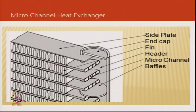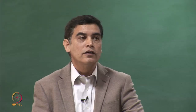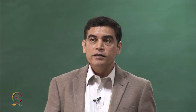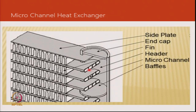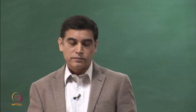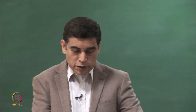Inside a micro-channel heat exchanger, there is a header into which refrigerant enters and is then distributed into different channels. Each strip has micro-channels within it — small openings inside a tube through which refrigerant is pushed using compressor pressure. Baffles equally distribute the refrigerant across the whole cross-section of the heat exchanger.